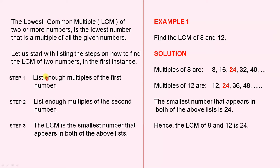Now here I've said list enough multiples. All that means is keep going in both lists until you see a number appearing which is common to both lists. So the first time that you see a number appearing that is common to both lists, that's the LCM. And that's what I mean by listing enough multiples. Let's look at Example 1.